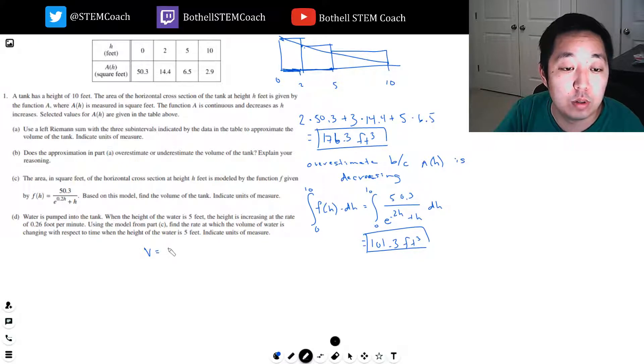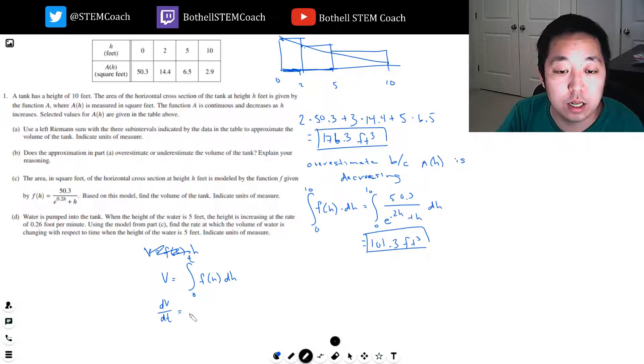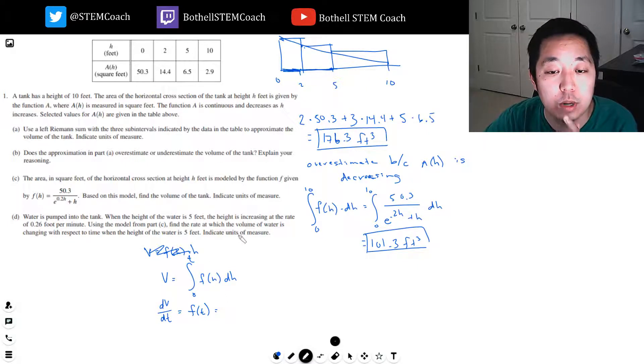Okay. So volume equals F of H times H, right? Yeah. The volume... Okay. No, no, no. What did we say? We said the volume was from 0 to T, F of H, DH, right? So I want to know what dV/dT is. And by fundamental theorem of calculus, that's simply F of T. Wait, let me just make sure I'm doing this. Find the rate at which the volume of water is changing with respect to when the height of the water is 5 feet. Oh, okay. But I don't know at what time it's at 5 feet.